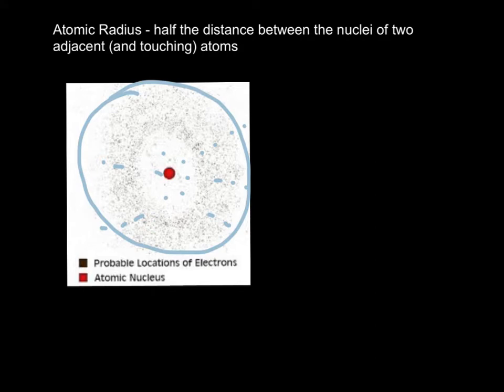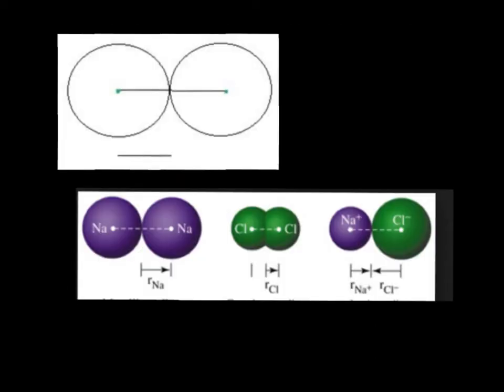Let's look at an example. So let's say I have a chlorine atom and a chlorine atom. And I measure the distance between the two nuclei. If I take half of that distance, you'll see that that is the radius of a chlorine atom. So for instance, here I have two sodium atoms.